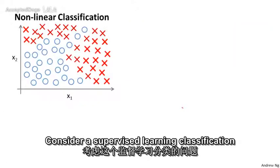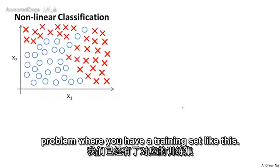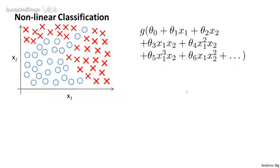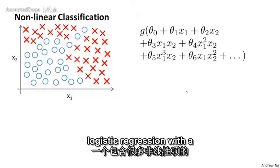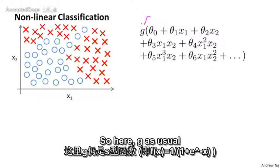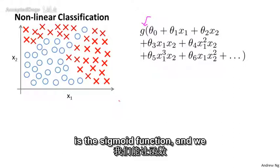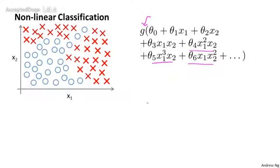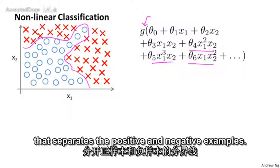Consider a supervised learning classification problem where you have a training set like this. If you want to apply logistic regression to this problem, one thing you could do is apply logistic regression with a lot of nonlinear features. Here, g as usual is a sigmoid function and we can include lots of polynomial terms. If you include enough polynomial terms, maybe you can get a hypothesis that separates the positive and negative examples.